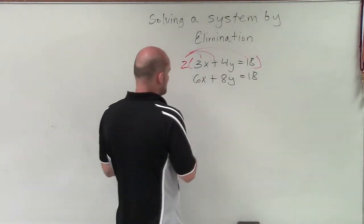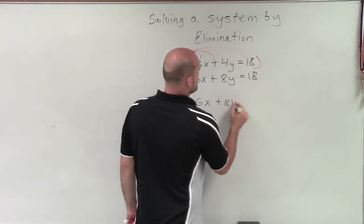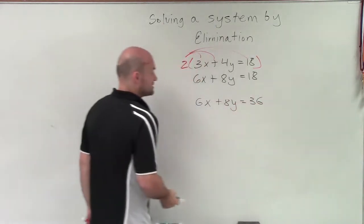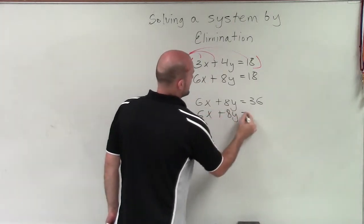Now, by multiplying by 2, I have 6x plus 8y equals 36. In our bottom equation, I have 6x plus 8y equals 18.